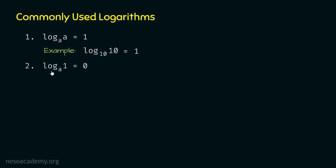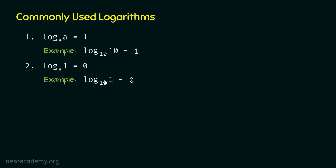The second logarithm is log 1 base A, which is equal to 0, because A power 0 is 1. For example, log 1 base 10 is 0 because 10 power 0 is 1. The base is 10 and the argument is 1, and that's why we get 0 as the result.